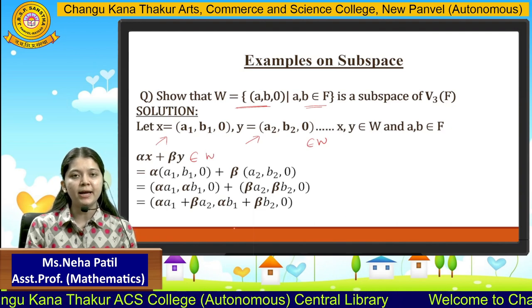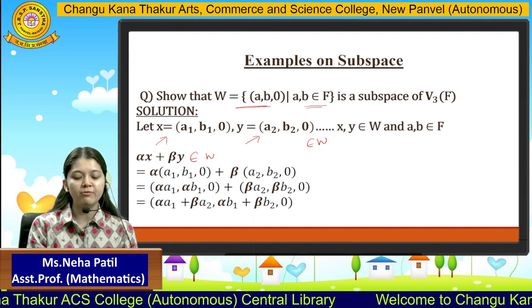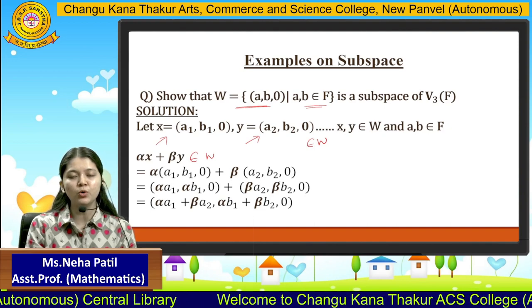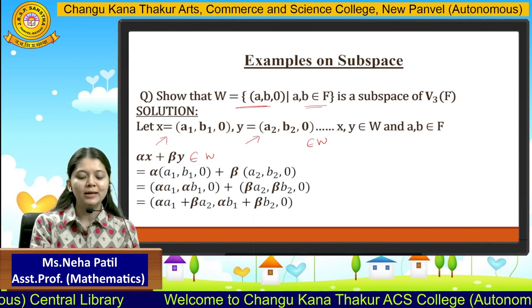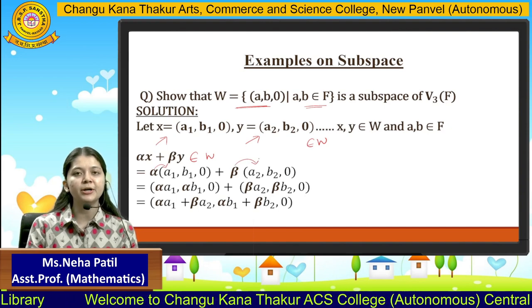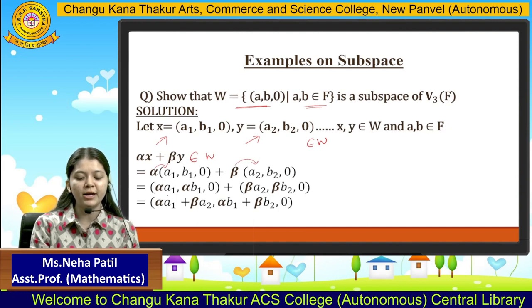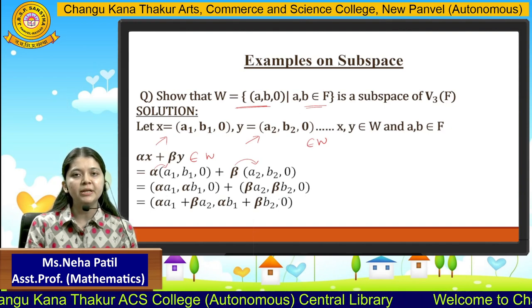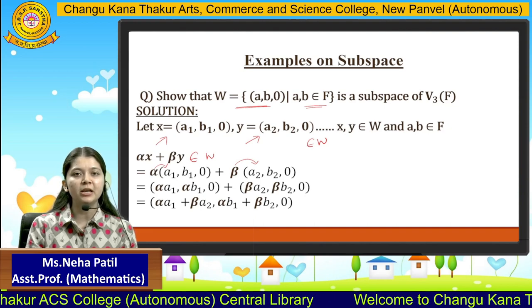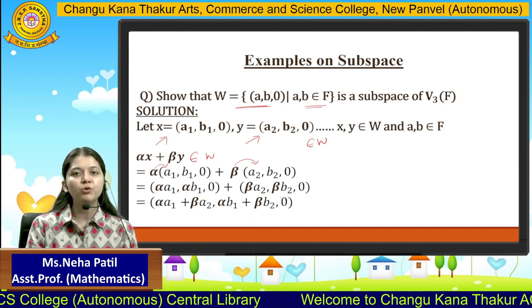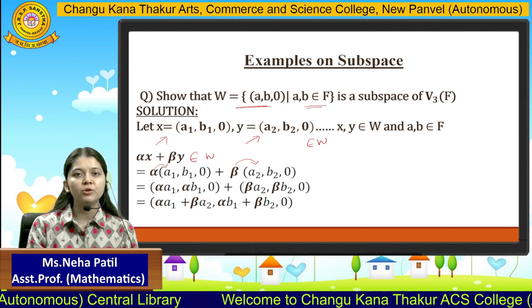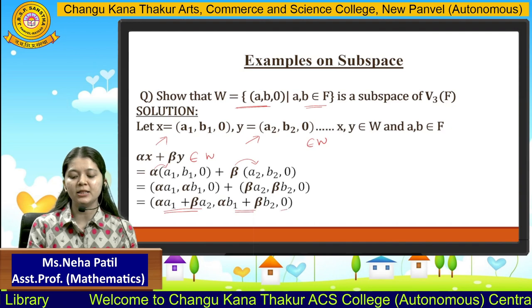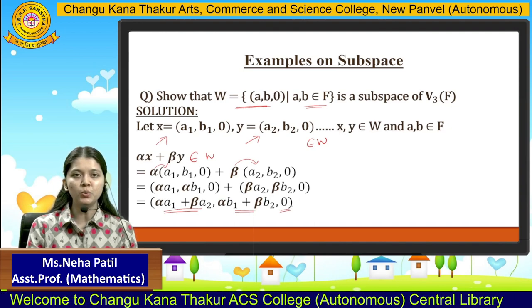Let's substitute x and y. Since x and y belong to W, they are of the form alpha times (a1, b1, 0) plus beta times (a2, b2, 0). We will multiply alpha and beta inside the brackets to get (alpha·a1, alpha·b1, 0) plus (beta·a2, beta·b2, 0). Now we add both elements coordinate-wise: first coordinate plus first coordinate, second coordinate plus second coordinate, and 0 plus 0, which results in 0.